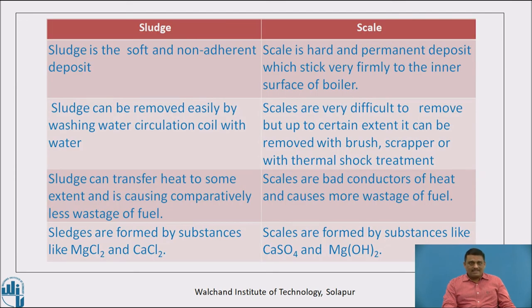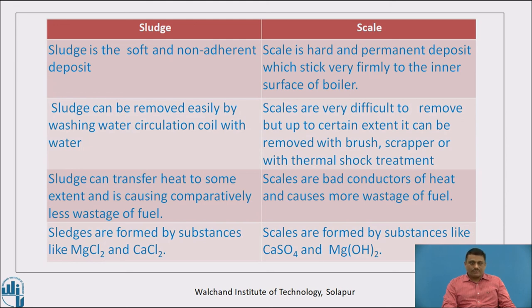In summary: sludge is a soft, non-adherent deposit, while scale is a hard permanent deposit which sticks firmly to the inner surface of the boiler. Sludge can be removed easily by washing the water circulation coil with water. Scales are very difficult to remove but can be treated with brush, scrapper or thermal shock. Sludge can transfer heat to some extent and causes comparatively less fuel wastage, whereas scales are bad conductors of heat and cause more wastage of fuel. Sludges are formed by substances like magnesium chloride and calcium chloride.